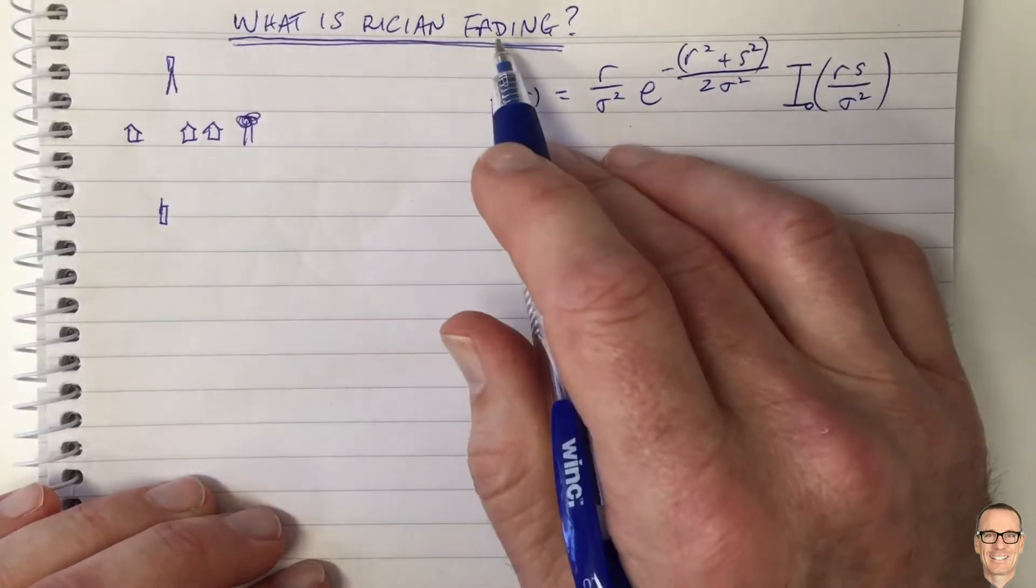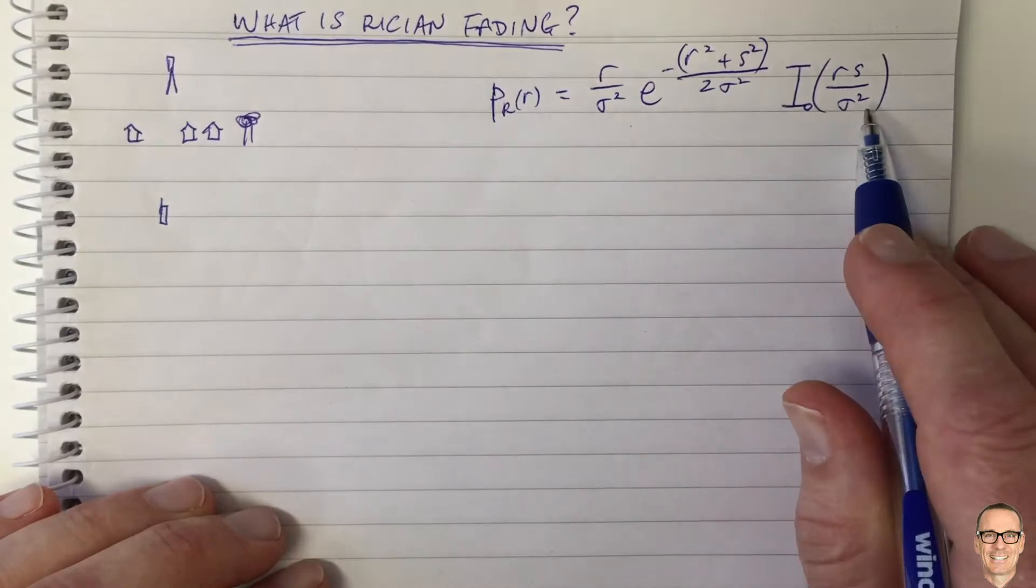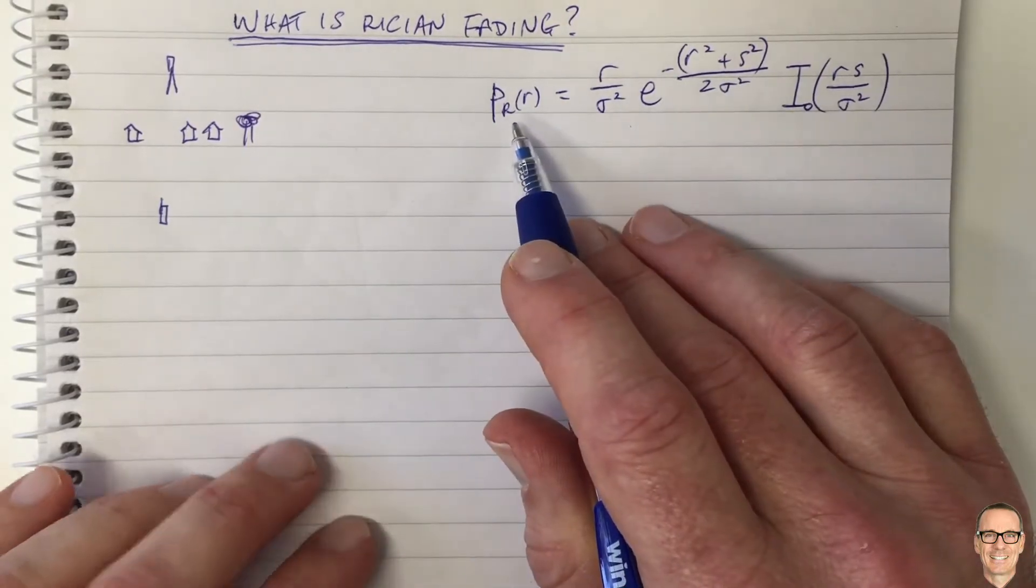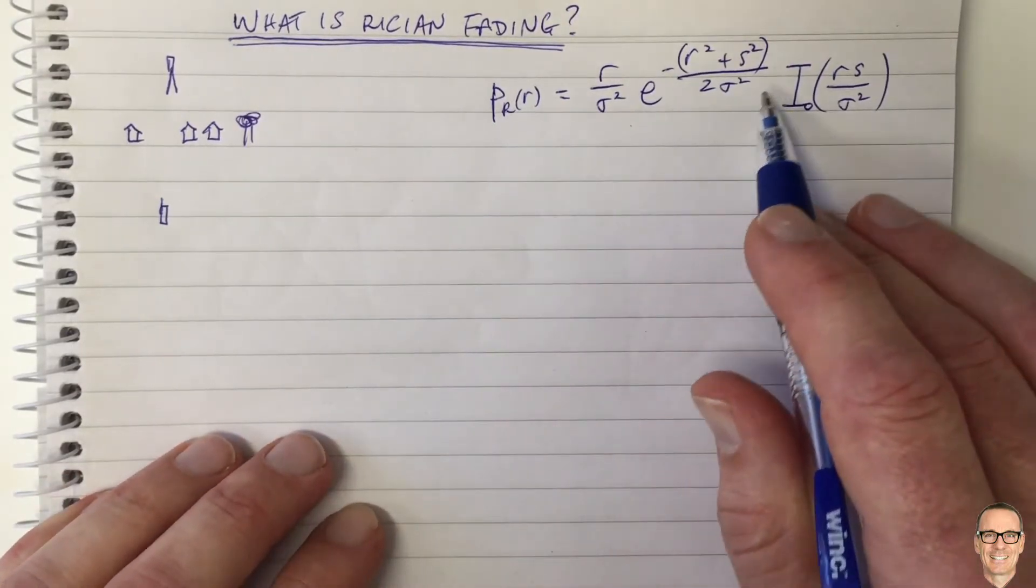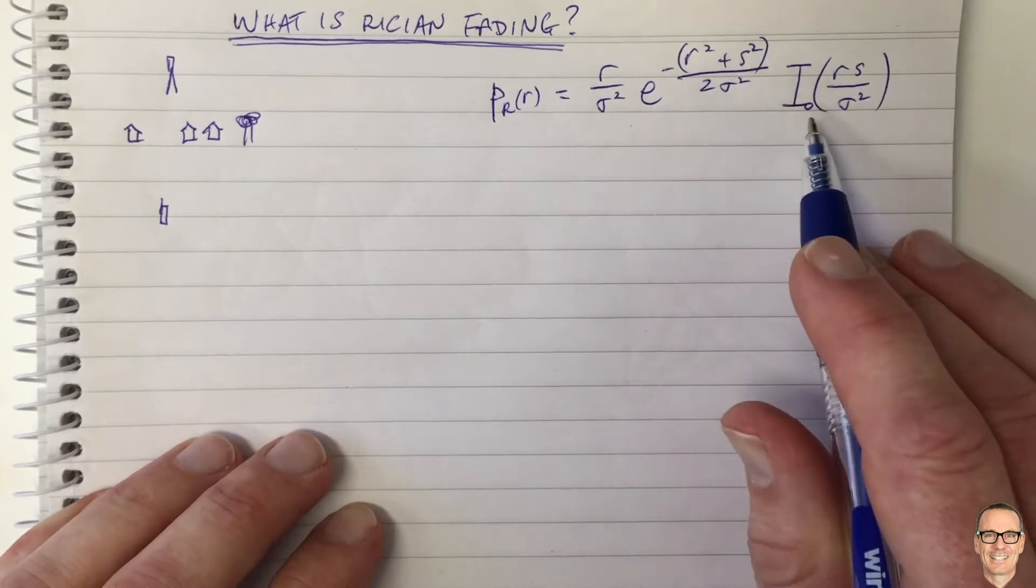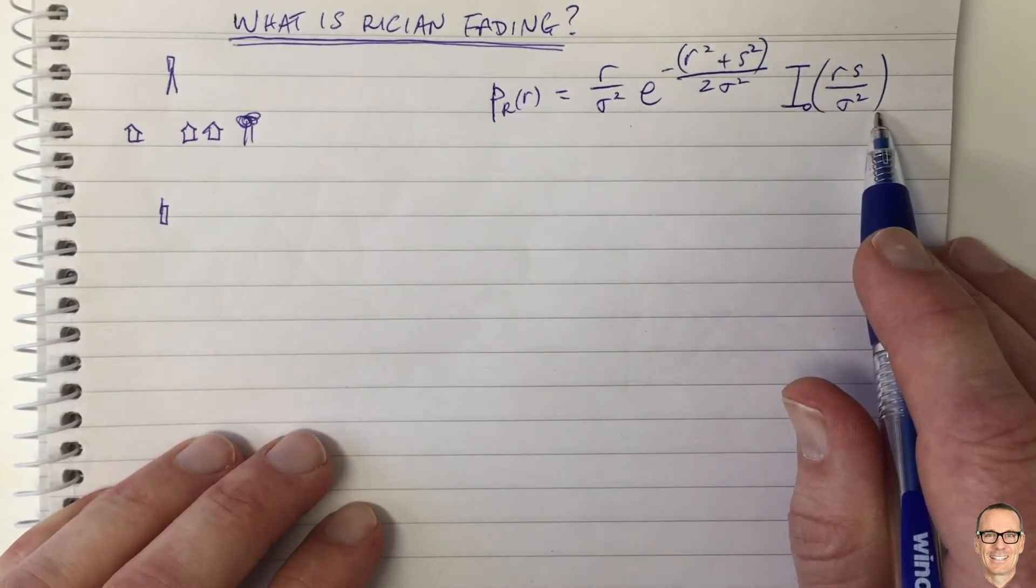So what is Rician fading? Well, here's the formula for the probability density function, and it looks like Rayleigh fading with an extra term and this modified Bessel function.